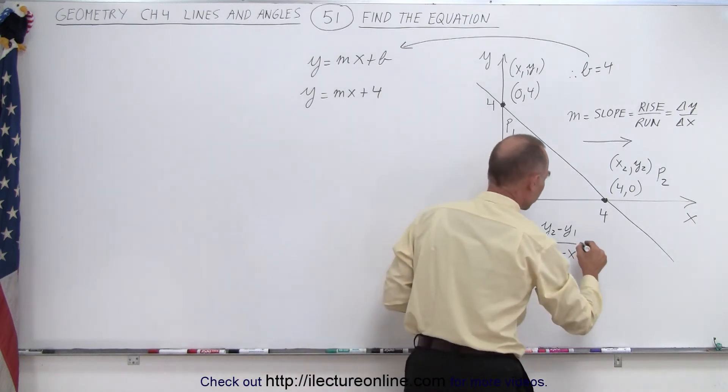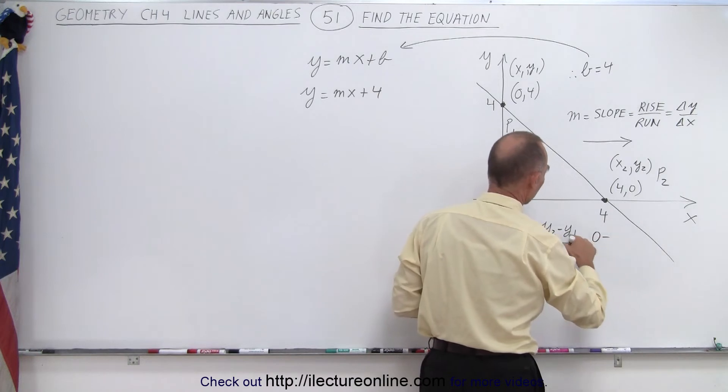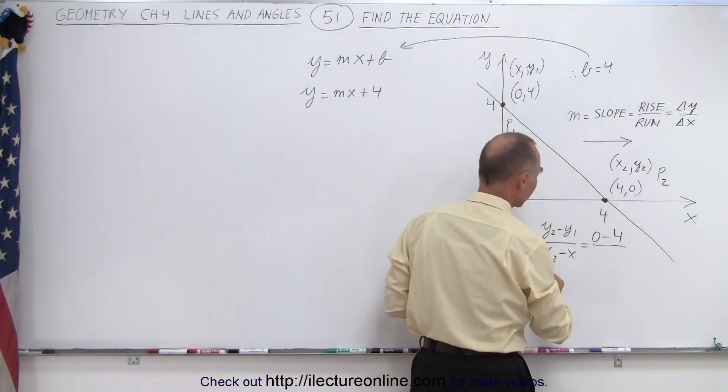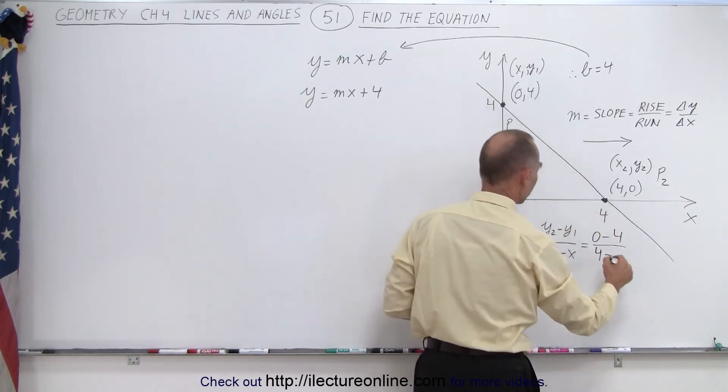And so now you can simply plug in the values. Y2 is 0 minus y1, which is 4, divided by x2, which is 4, minus x1, which is 0.